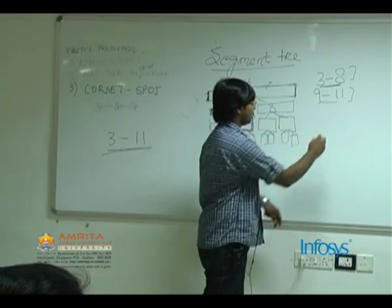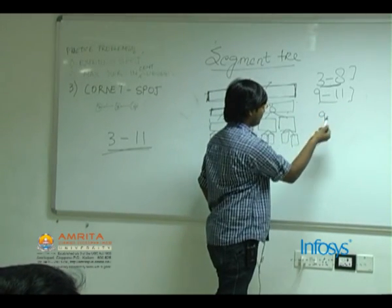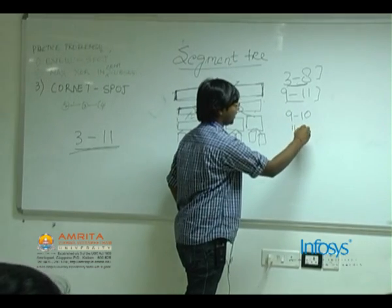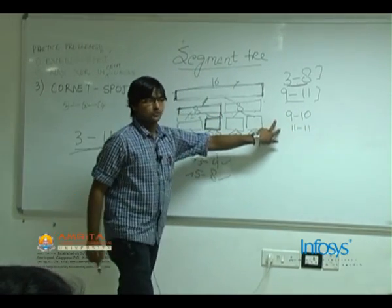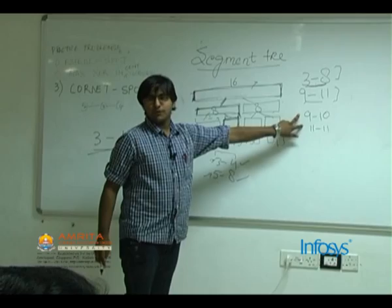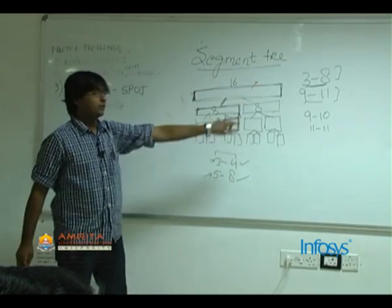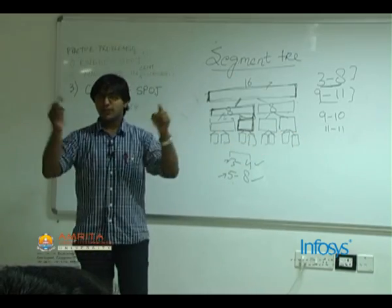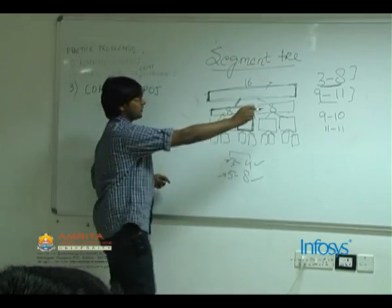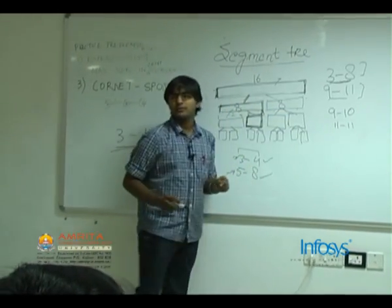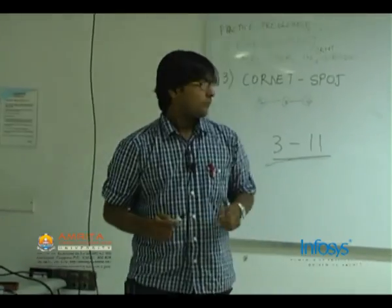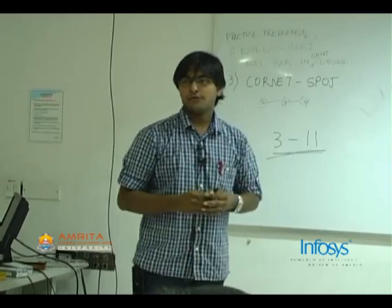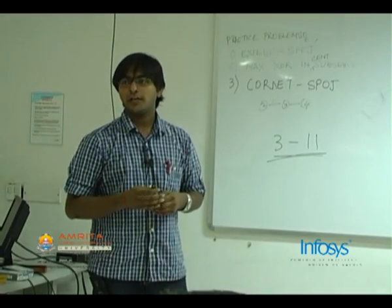Similarly for 9 to 11, we break it into 9 to 10 and 11 to 11. We take the minimum of these two ranges to get the minimum for 9 to 11. Then we have the minimum for 3 to 8 and the minimum for 9 to 11 — we take the minimum of those two and get the minimum for the full 3 to 11 range. Any other range can be solved likewise.